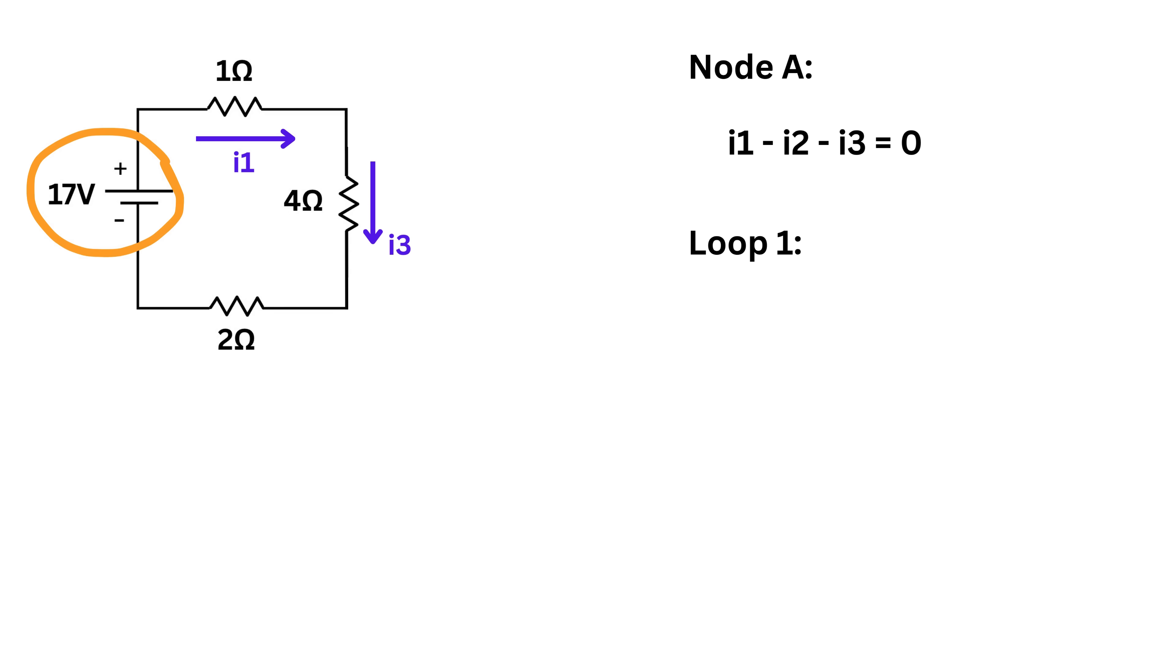So first we have a voltage rise of 17 and thus we write plus 17 volts. Then because of this resistor we have a voltage drop of i1 times 1 or i1, and thus write minus i1 here. Then because of this resistor we have a voltage drop of i3 times 4 and thus write minus 4i3 here. Then finally because of this resistor we have a voltage drop of i1 times 2 and thus write minus 2i1 here and set their total equal to zero. Both of them together will give minus 3 times i1. Now take both of them here to get 3i1 plus 4i3 equals 17. Nice.